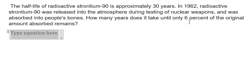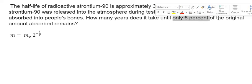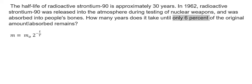We have the formula: m equals m₀ multiplied by 2 to the power of negative t over T. So because we just have only 6% of the original amount, we divide both sides by m₀.